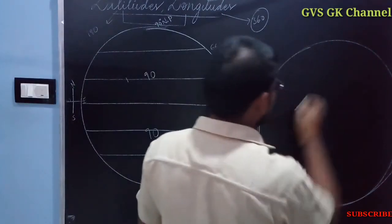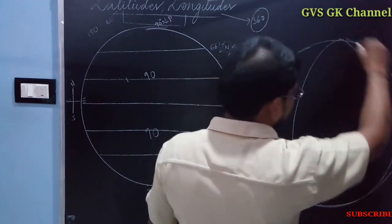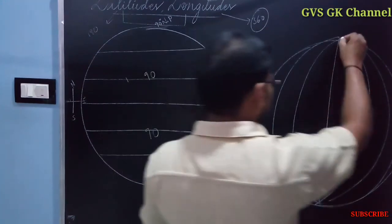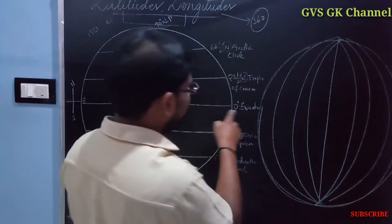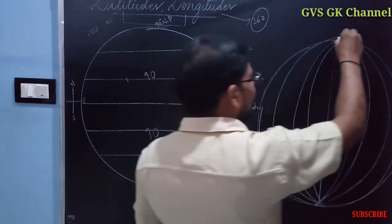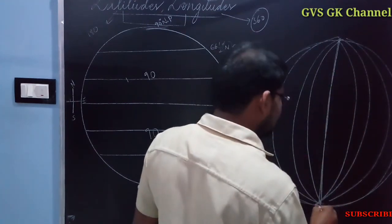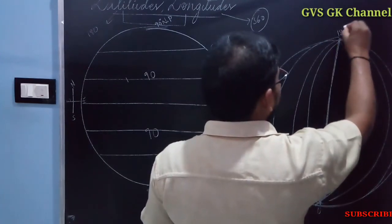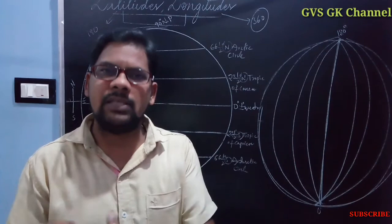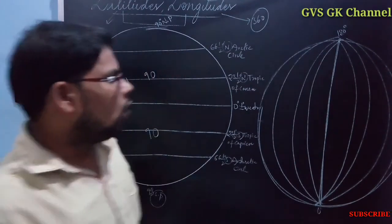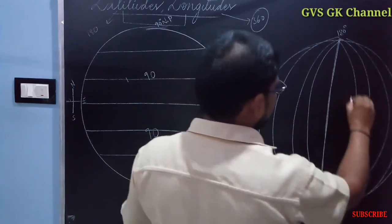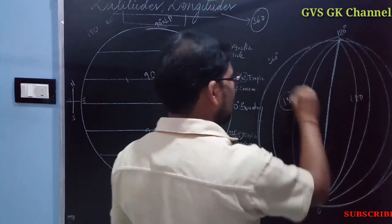Longitudes are semicircles and are also imaginary lines on the globe. There is a vertical line passing from the center of the globe — the 0 degrees meridian, also known as the 180 degrees eastern and western meridian. There are 180 eastern longitudes and 180 western longitudes, totaling 360 longitudes on the globe.